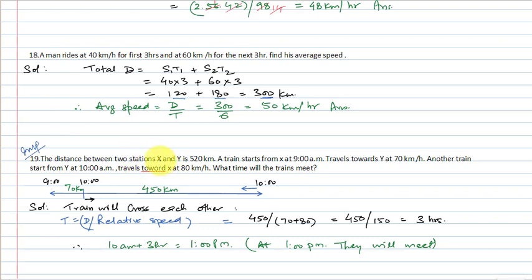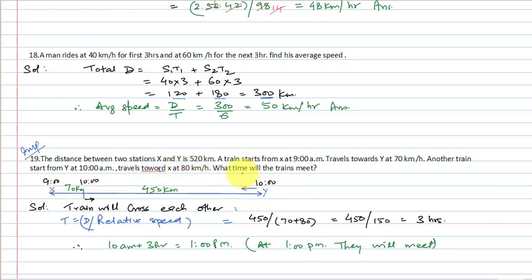Question number 19: The distance between two stations X and Y is 520 km. A train starts from X at 9 AM travelling towards Y at 70 km per hour. Another train starts from Y at 10 AM travelling towards X at 80 km per hour. At what time will the trains meet?